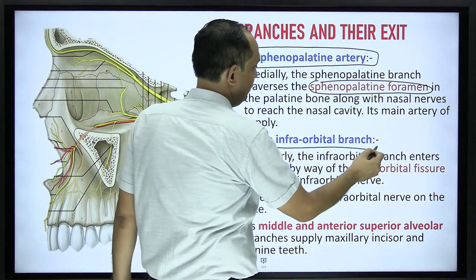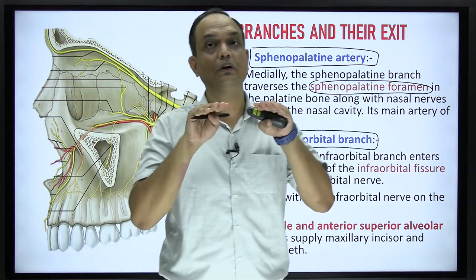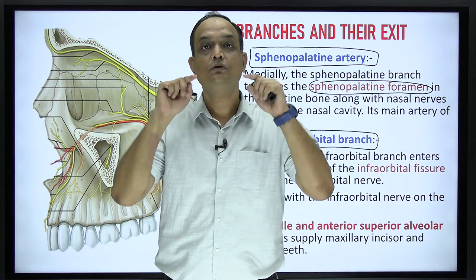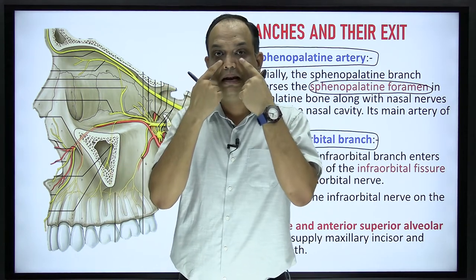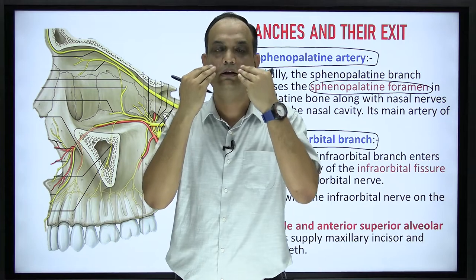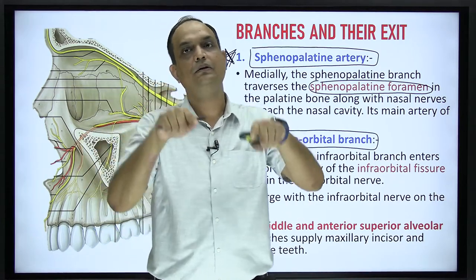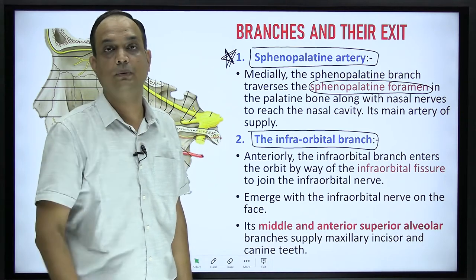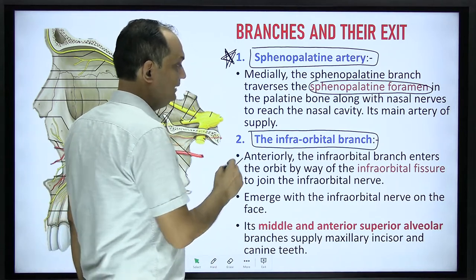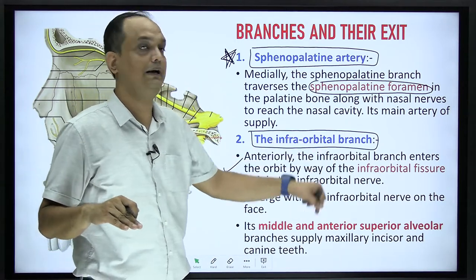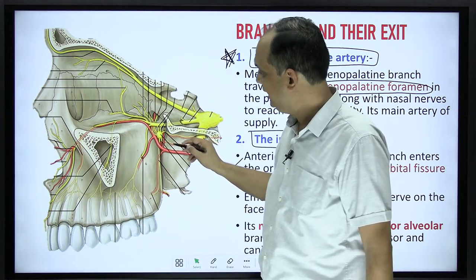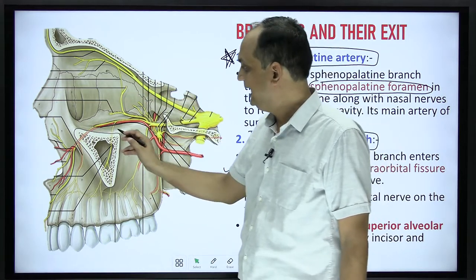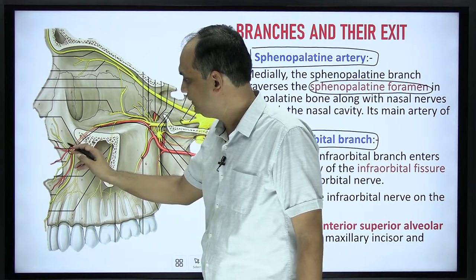Then you have the infraorbital artery. There is an anterior communication in the upper part of the fossa known as the inferior orbital fissure. Through that fissure this artery goes and runs into the floor of the orbit — or the roof of the maxillary sinus — and in this it goes into the infraorbital canal and ultimately comes out on the face through the infraorbital foramen. Here you can see that this is the artery running into the inferior part of the orbit, then entering the canal and coming out through the infraorbital foramen.